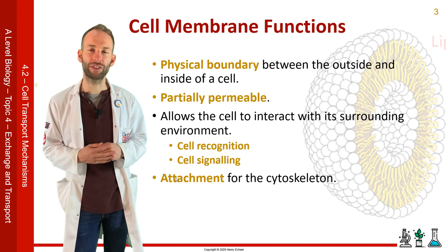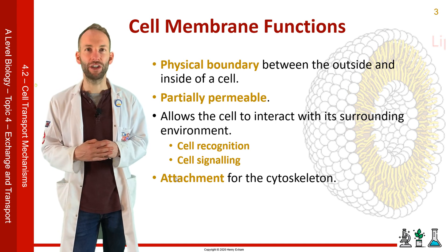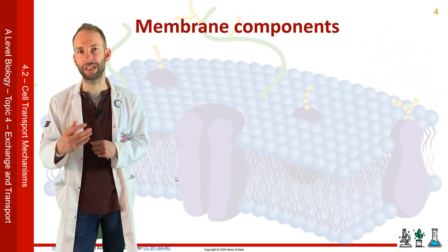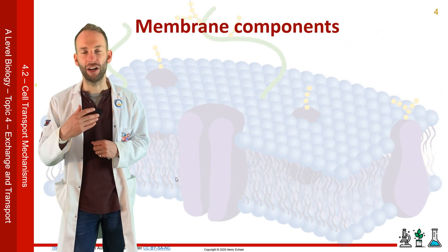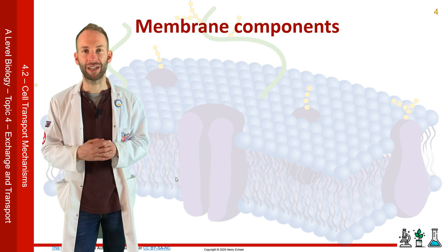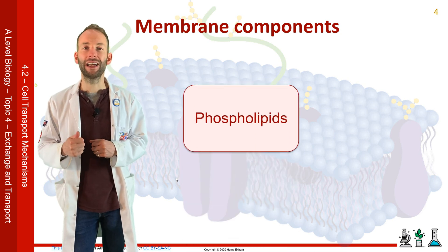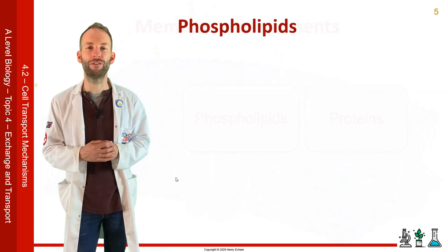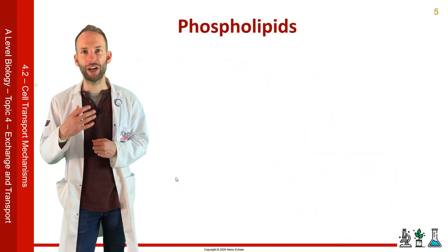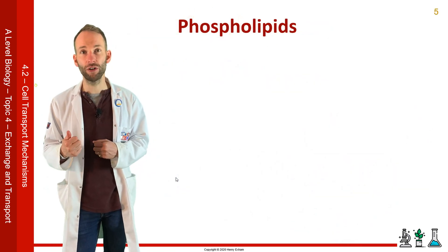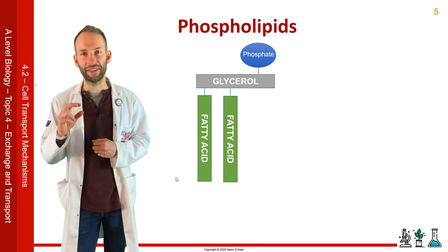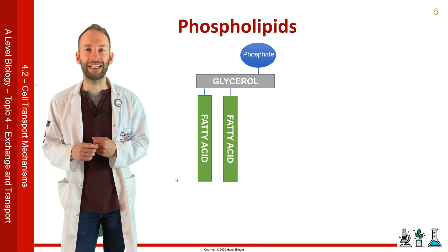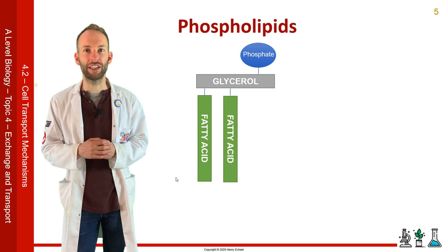In order for cell membranes to carry out their many functions, they have a structure made up of the following components, which we're going to explain in more detail throughout this presentation: phospholipids and proteins. If you've watched my video on lipids, you already know about phospholipids. They are made up of a glycerol, two fatty acids, and then a phosphate head. The phosphate head sticks up and the tails stick out the other side of the glycerol.